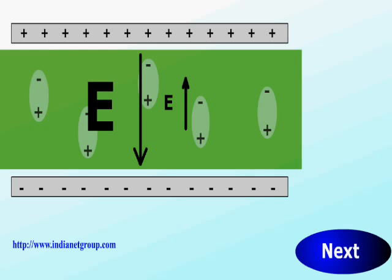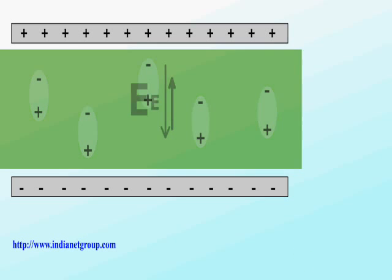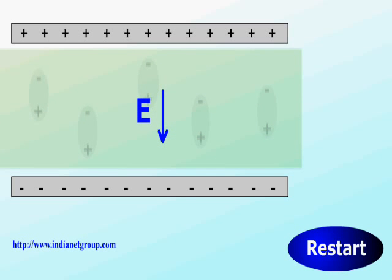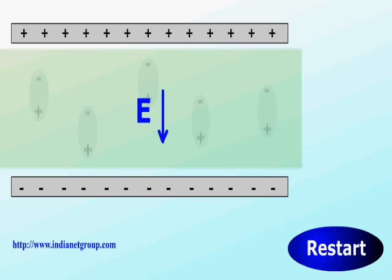So clearly these two fields are opposing each other. So here we have the net field. The net field now is smaller.